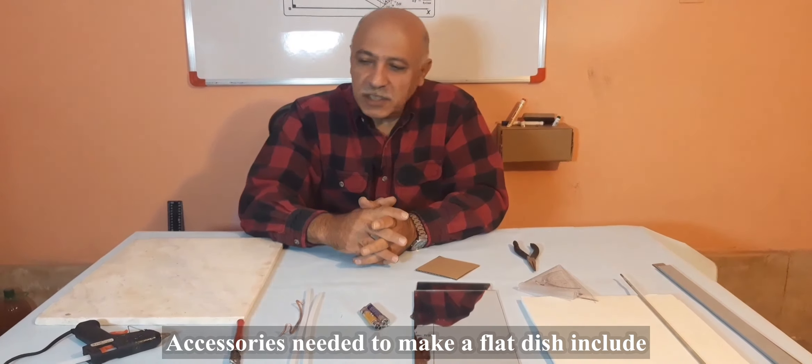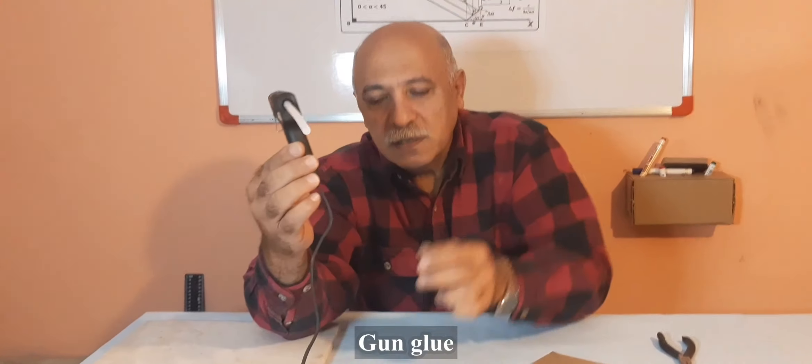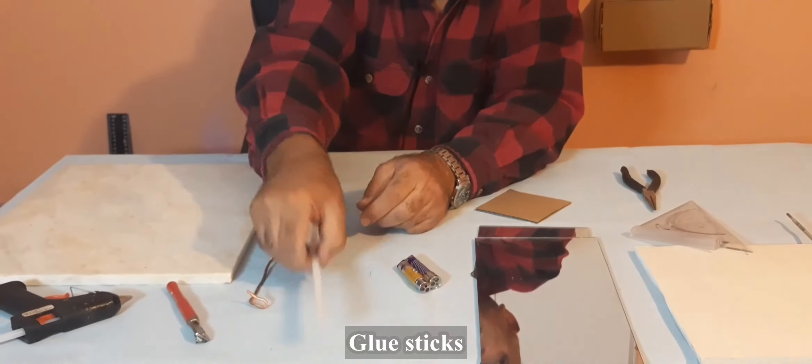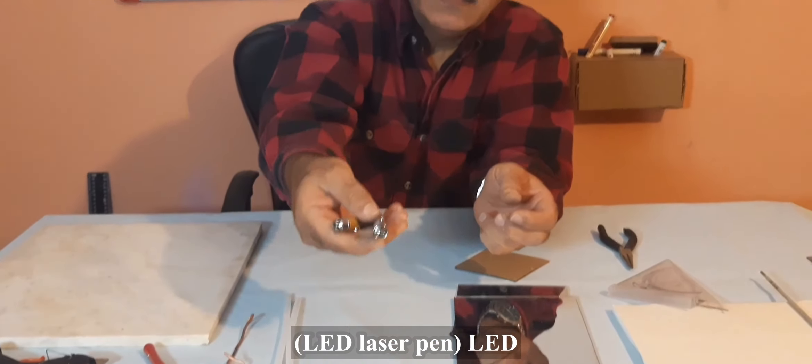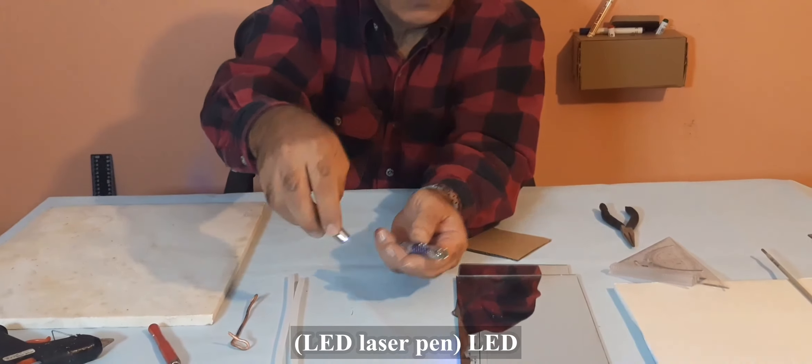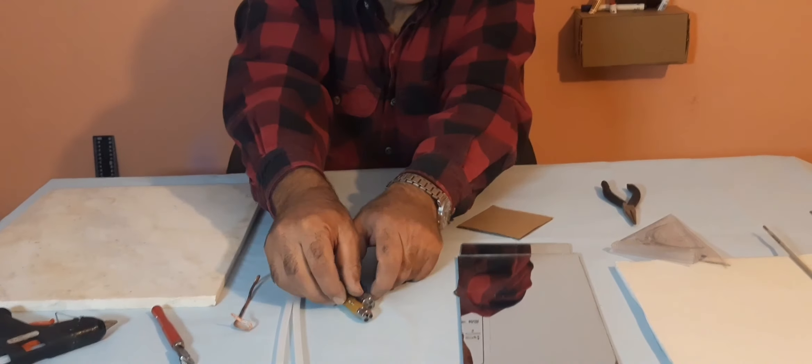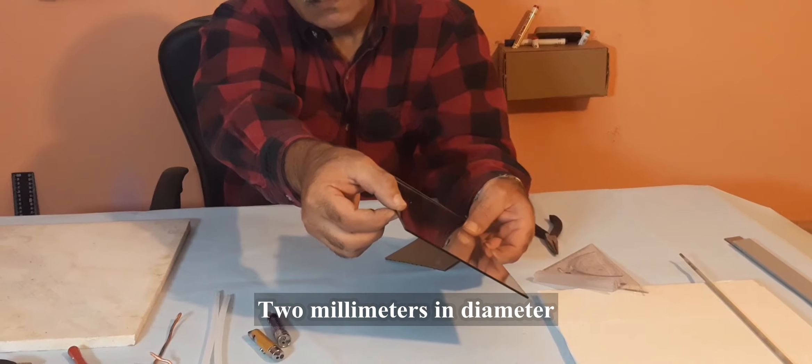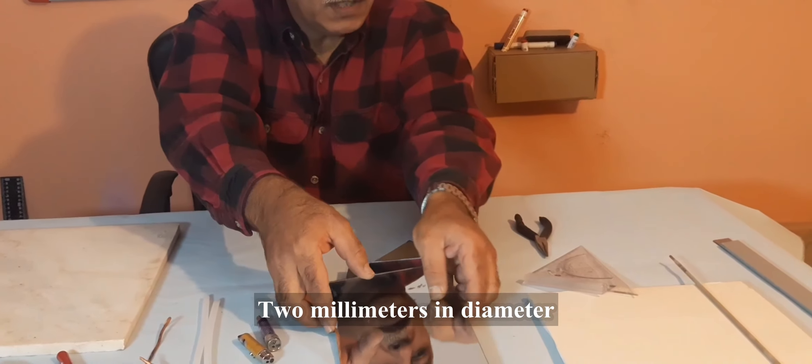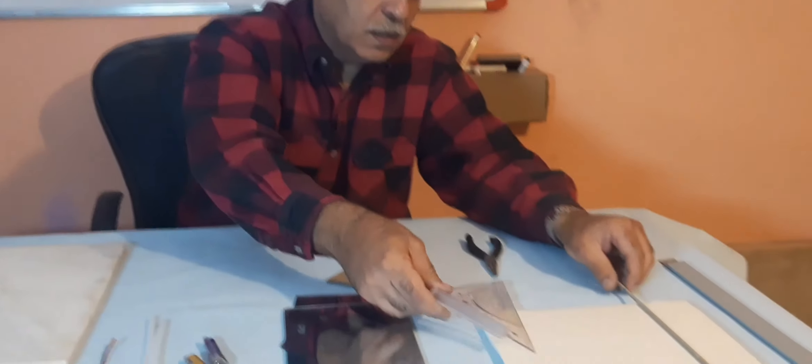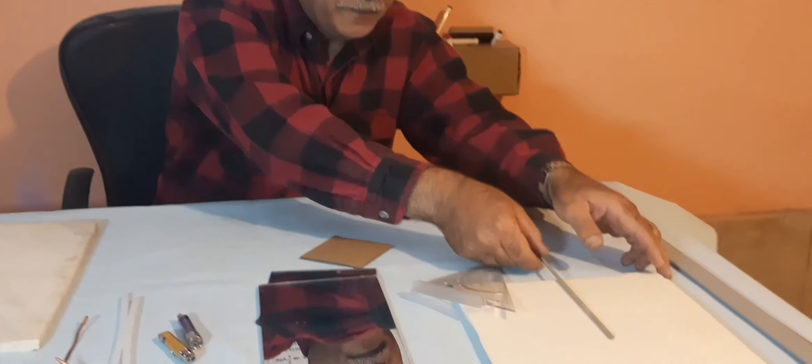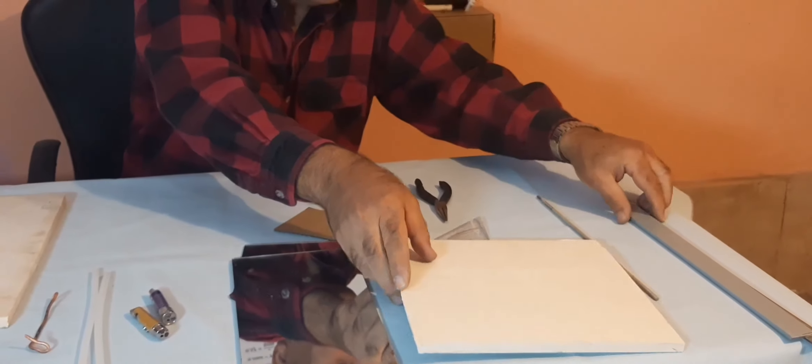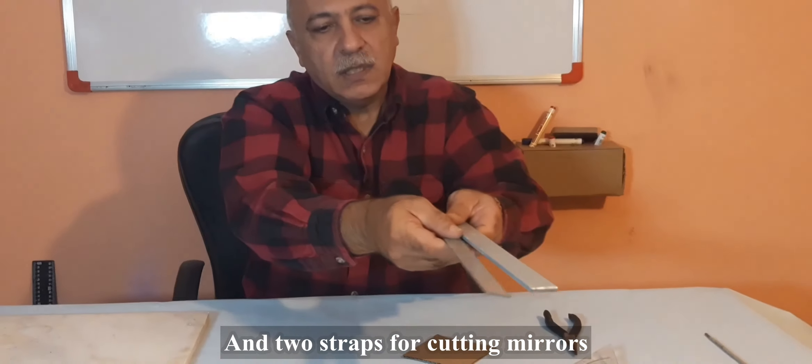Accessories needed to make a flat solar dish: gun glue, a glass cutter, a piece of soft metal wire, glue sticks, LED laser pen, mirrors of required size and good quality two millimeter in diameter, a set square, a 30 centimeter rod, a plate required for the flat dish, and two straps for cutting mirrors.